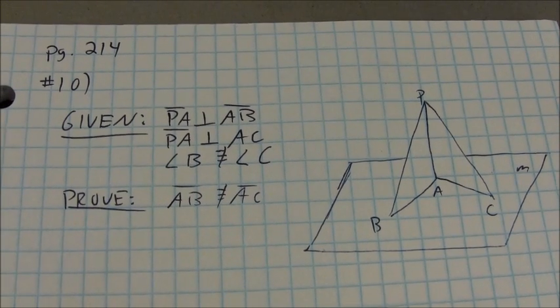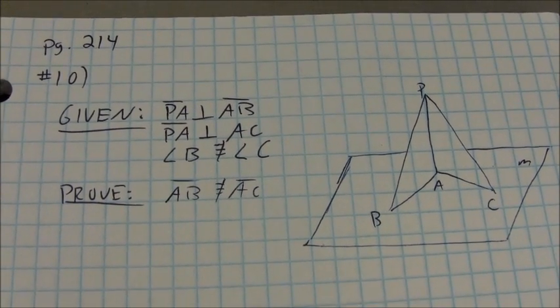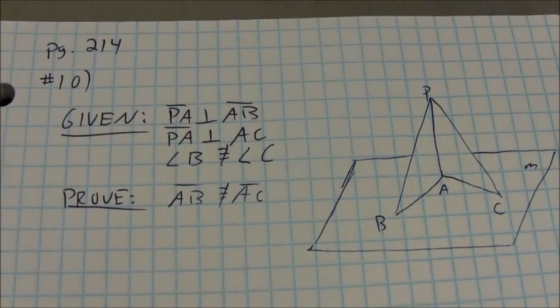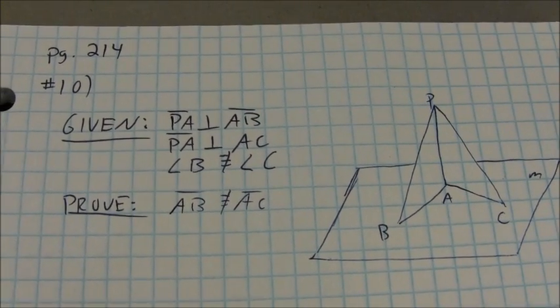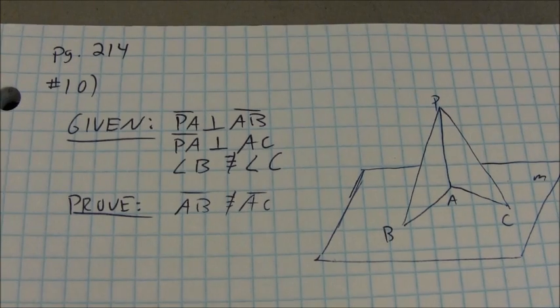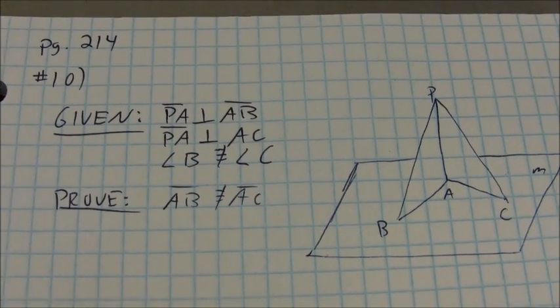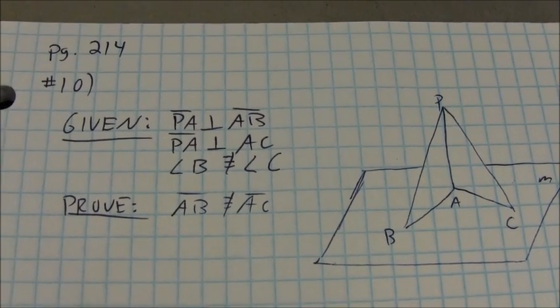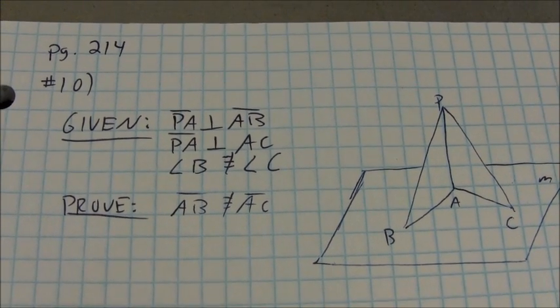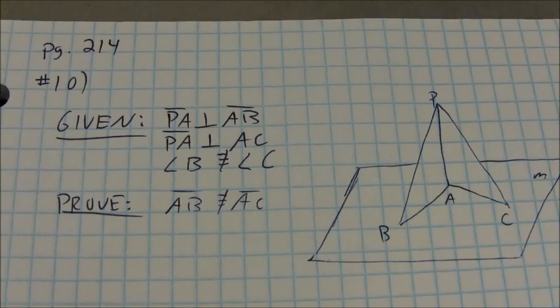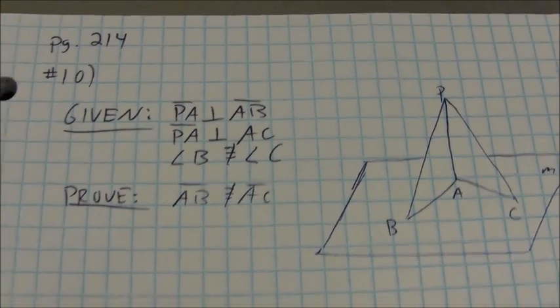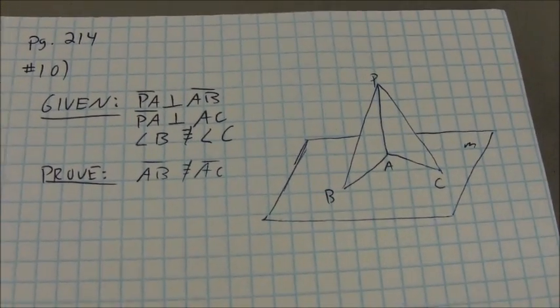So the idea of the indirect proof is quite simple. Either AB is congruent to AC, or it's not. And if I can show that they can't be congruent for some reason, then I know the other possibility has to be true. And that is that they're not congruent to each other. So that's the basic concept.